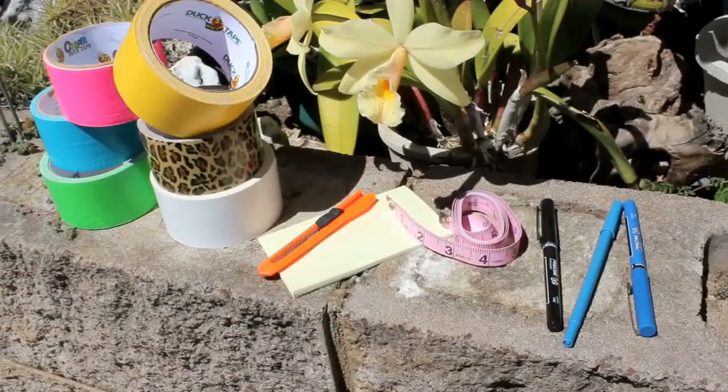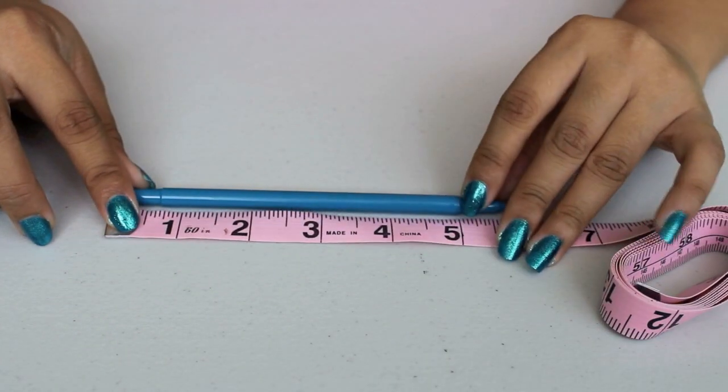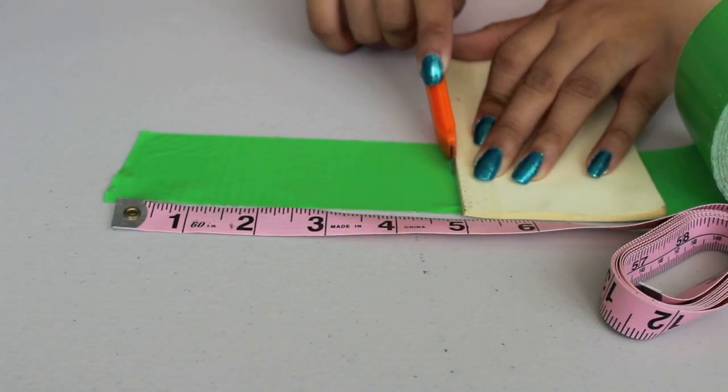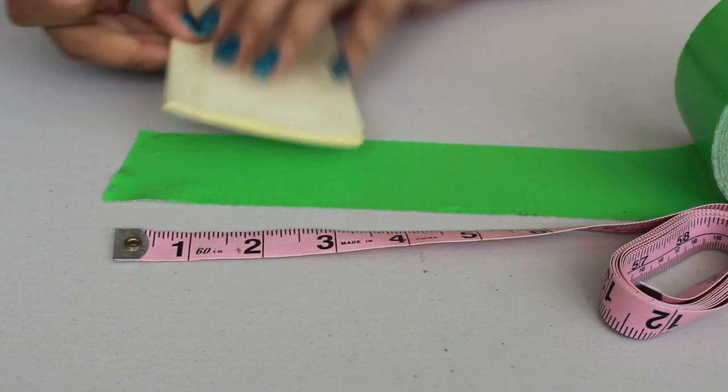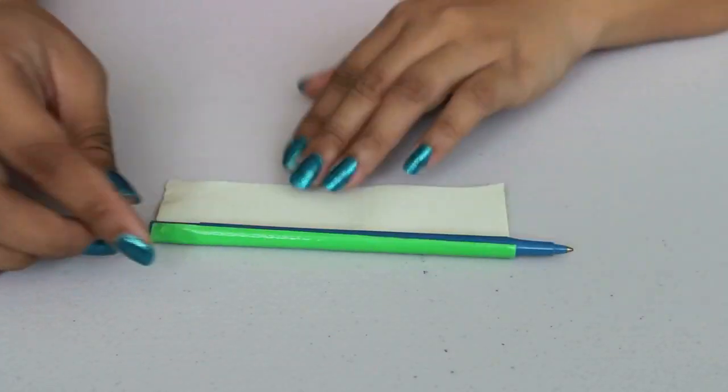Start by measuring the base of your pen and cut out a strip of duct tape. I find that using the razor blade is much easier than using a pair of scissors.